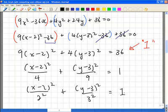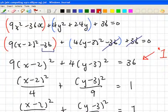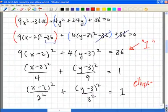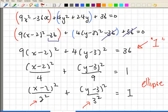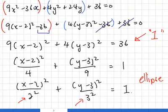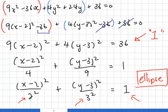Now it is more obvious that this is the general form of the ellipse. Just to recap: if the denominators 2-squared and 3-squared were the same value, then we would know it's a circle — we could multiply through and get the radius on the right-hand side. For this case, this is the ellipse we have formed.